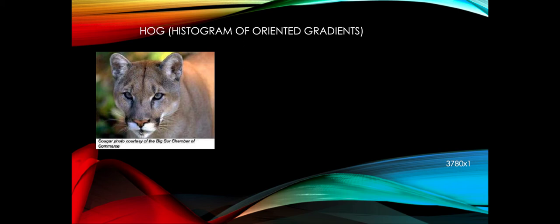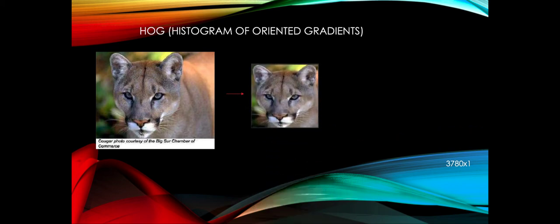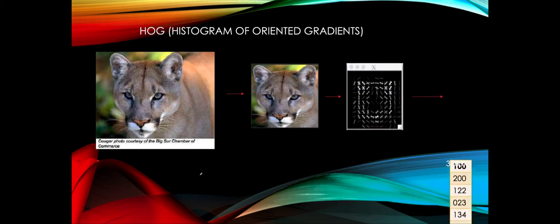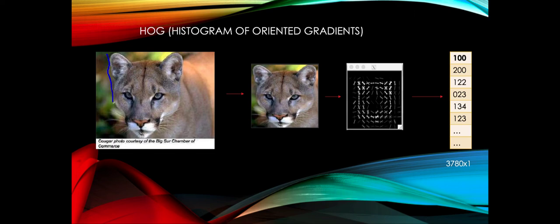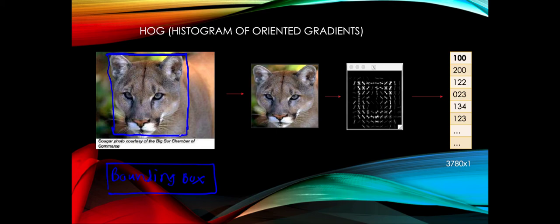The process takes an image — a two-dimensional array of pixels in three channels — and first we crop out the face of the cougar, which is what we want to detect. We use the bounding box coordinates provided with the image to draw a bounding box around the cougar face, crop out that part, and then convert this image into a compact representation called a HOG descriptor, which is a 3780-dimensional vector that we feed to the machine learning algorithm.